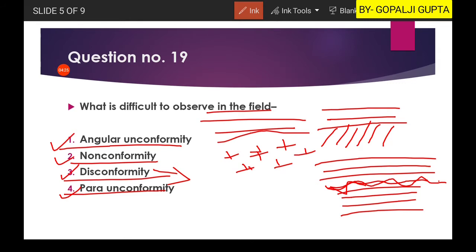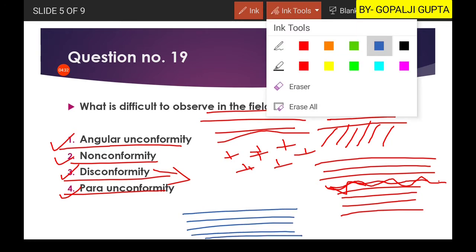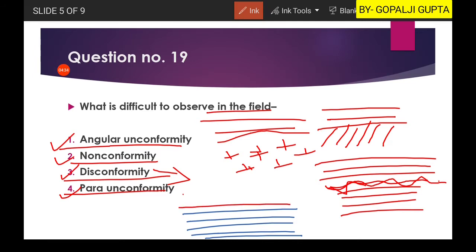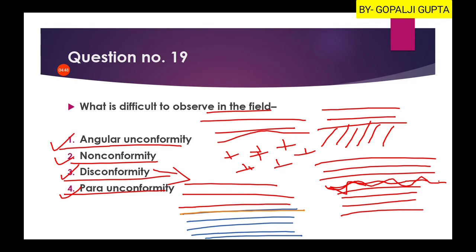So it will be disconformity. While if we talk about the paraconformity, there are horizontal layers and there are above also horizontal layers, and the unconformity or the time gap is also horizontal. So you have very much difficulties in found the, in finding a time gap which is horizontal within the horizontal layers. That's why fourth option will be our right answer.